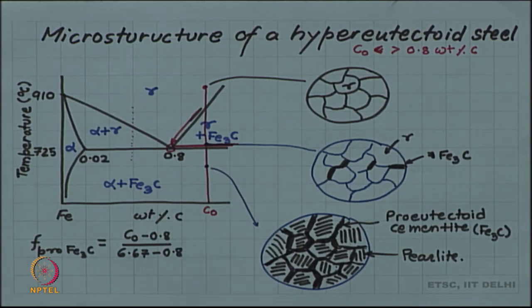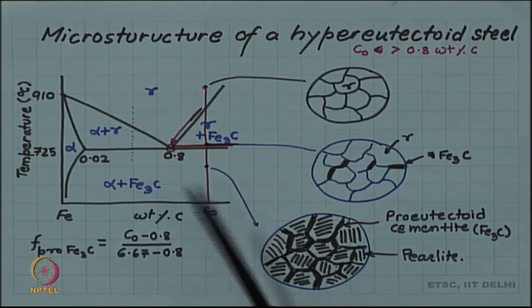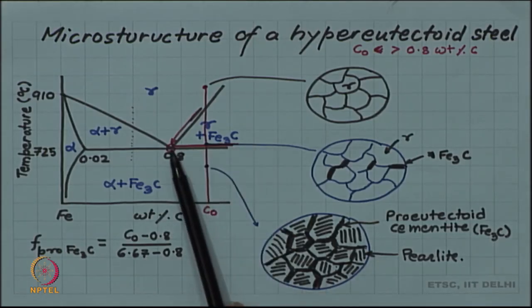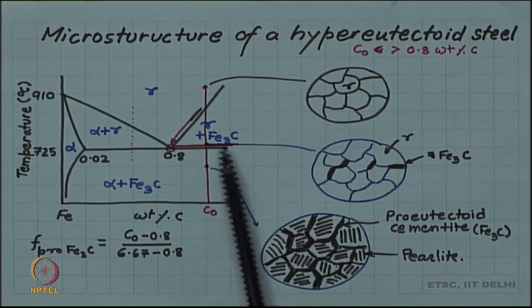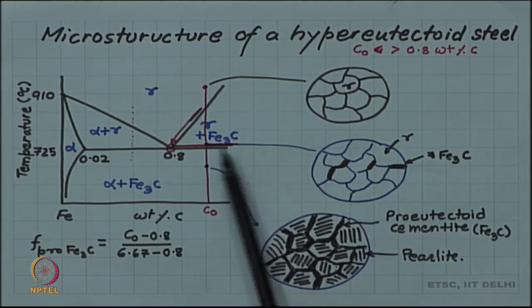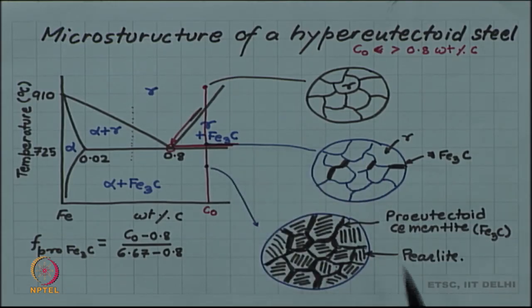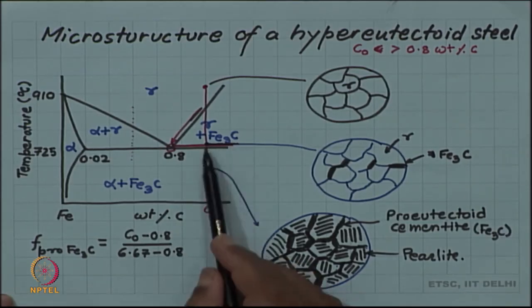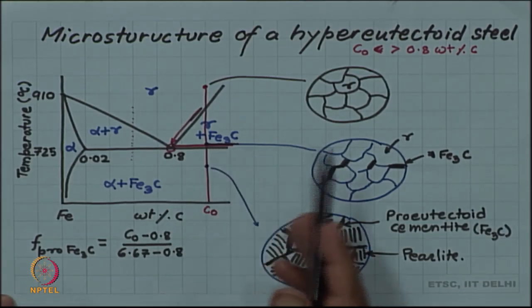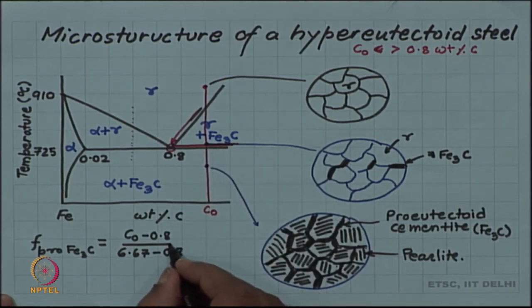Generally in steel even in the hypereutectoid steel it is greater than 0.8, but it is not much greater than 0.8. It goes up to 1, 1.2. Steels greater than 1.2 percent carbon generally will become too brittle. Most engineering alloys will have up to maybe 1, 1.2 percent steel even if they are hypereutectoid.